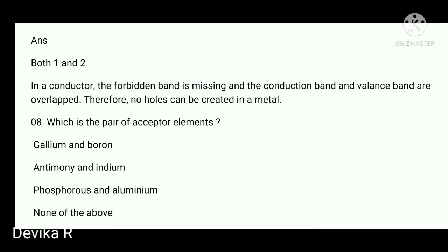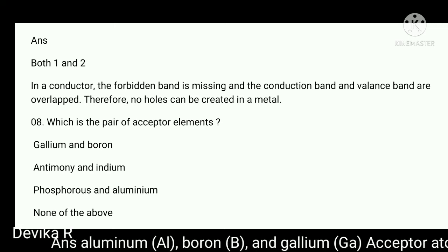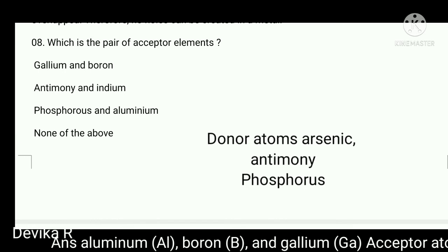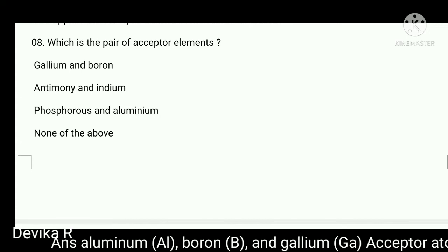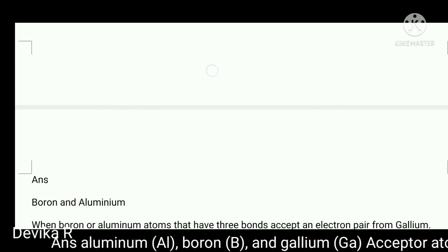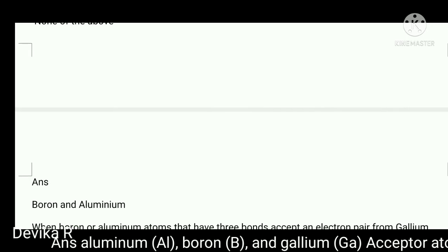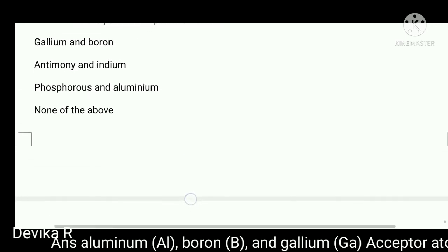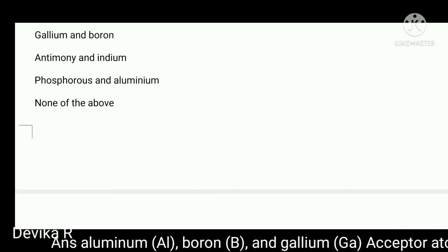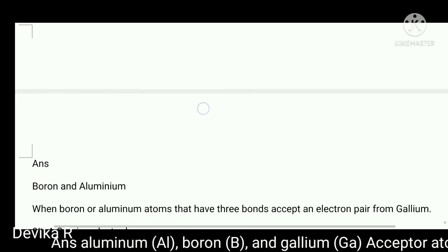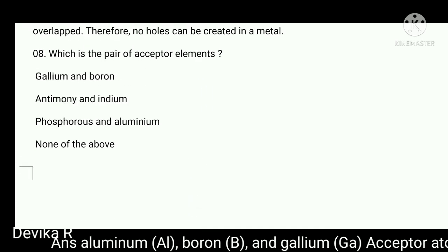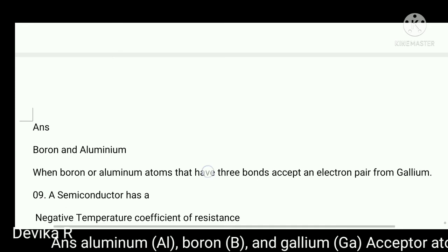Next question: which is a pair of acceptor elements? Acceptor elements are gallium and boron. Donor elements are phosphorus, arsenic, and antimony — these are pentavalent impurities. The question asks for a pair of acceptor elements, so gallium and boron is the right answer. Acceptor atoms are trivalent impurities: boron, gallium, and indium.